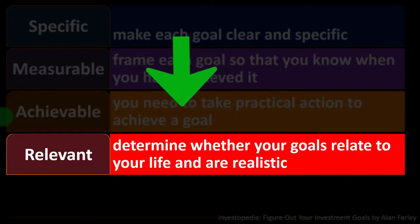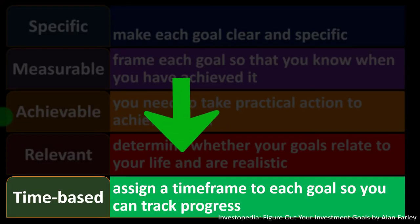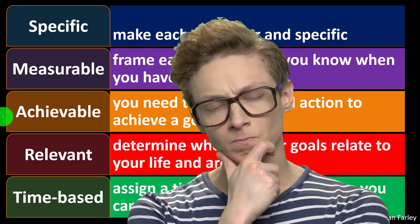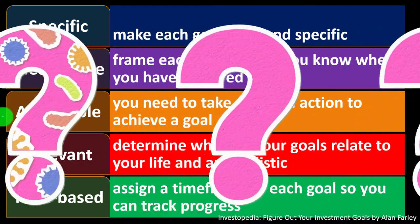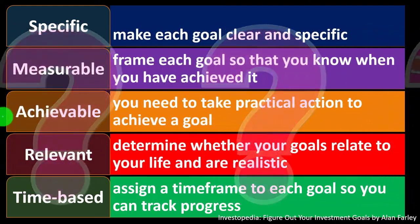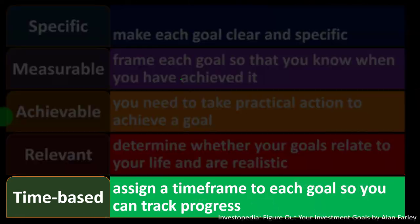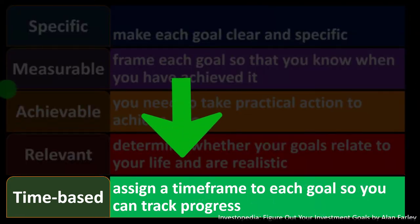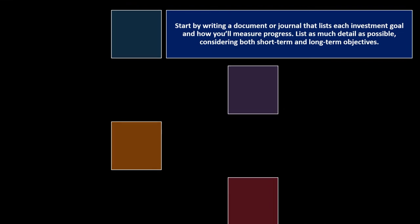Relevant means determining whether your goals relate to your life and are realistic. Time-based means assigning a time frame to each goal so you can track progress. When we think about a goal like 'I want to live well at some point in the future,' we need to know how far out that is. Goals need to be measured in terms of something measurable — which could be time or dollars — and how long it will take.